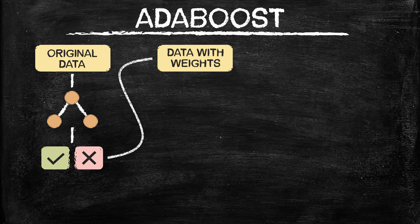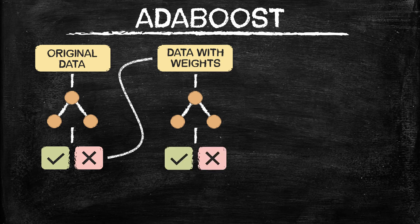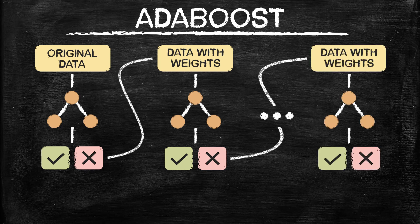This second model is going to try to fix all the mistakes the first model made while preserving the ones it got right. This updated dataset is then fed into another stump, and we just continue this process — the second model gives us classes predicted accurately and classes that weren't, and we try to preserve the accurate predictions in the next model while fixing the mistakes. We continuously do this for however many models we want within the AdaBoost algorithm, and there are parameters to set the number of estimators, which we'll get into when we start actually using it.